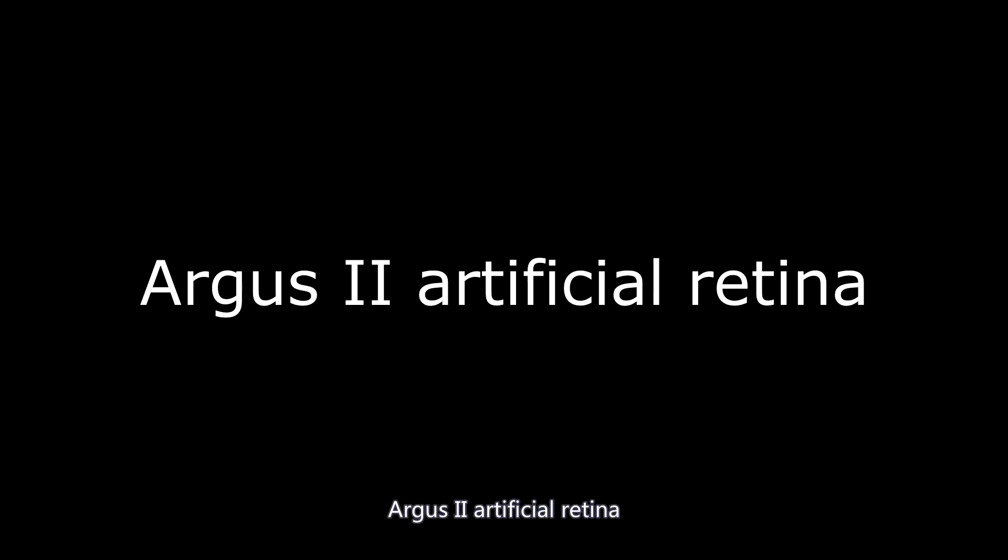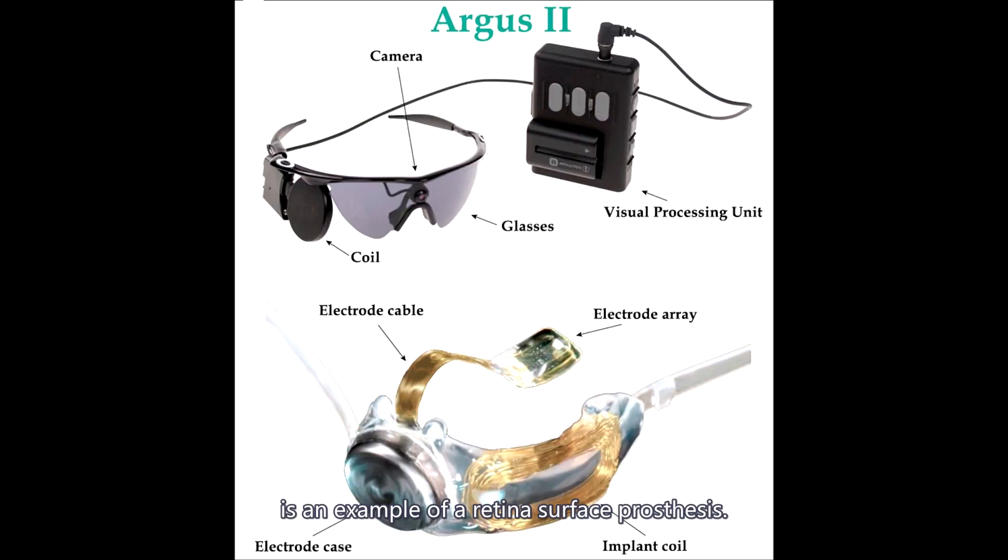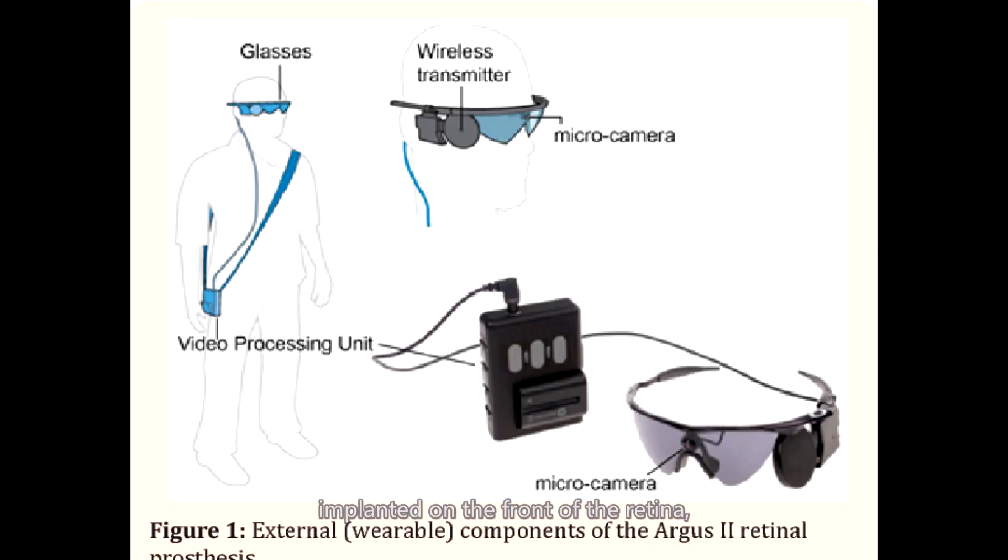Argus 2 artificial retina. The Argus 2 is an example of a retina surface prosthesis. It is composed of a tiny microchip implanted on the front of the retina and a mini camera embedded in glasses.